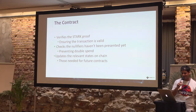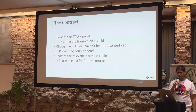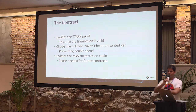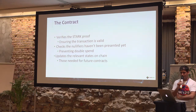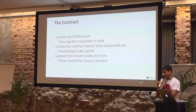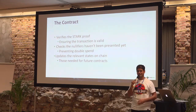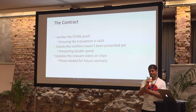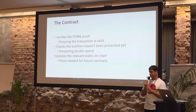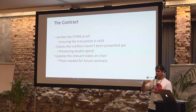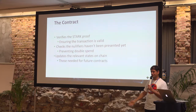Besides that, the contract also needs to do its consensus work — meaning it needs to verify that nullifiers haven't been presented yet, so they are not spent more than once. And it needs to update the relevant states on-chain. For instance, in Zcash, every time miners get new commitments, they need to add them to the Merkle tree so that future payers can prove they know those commitments.